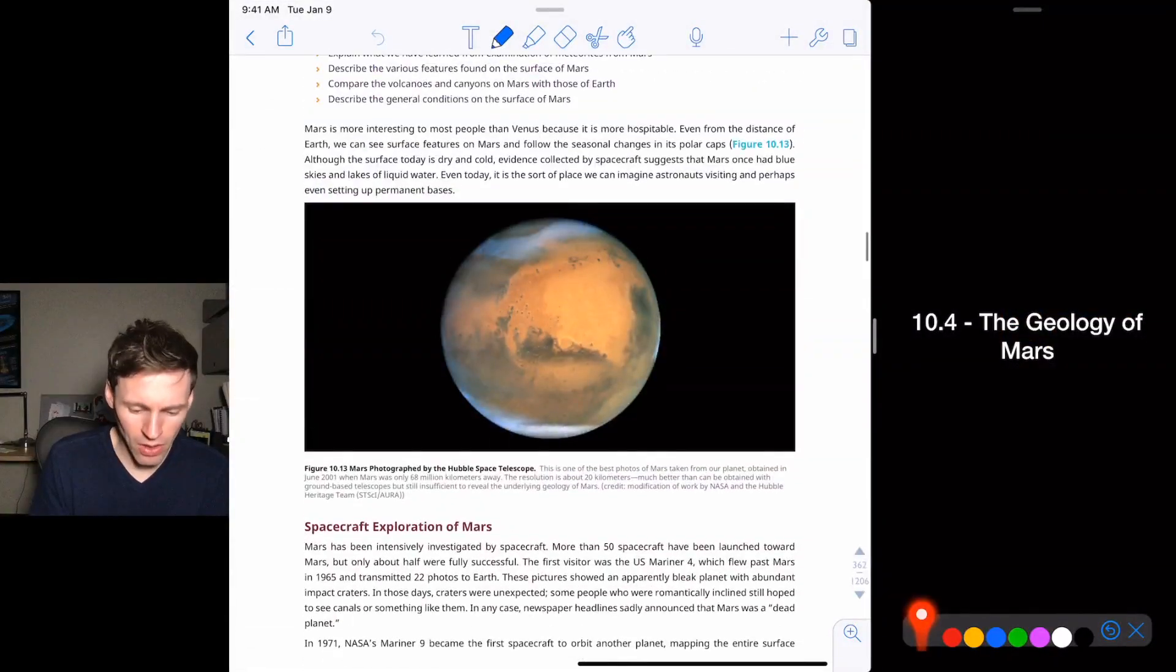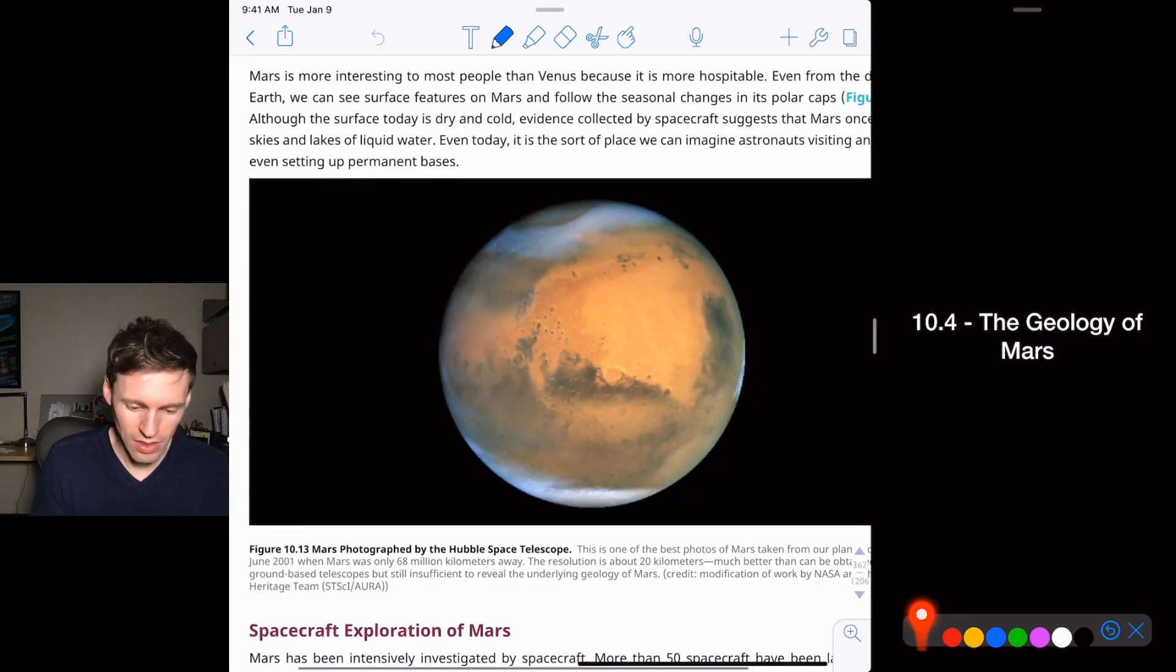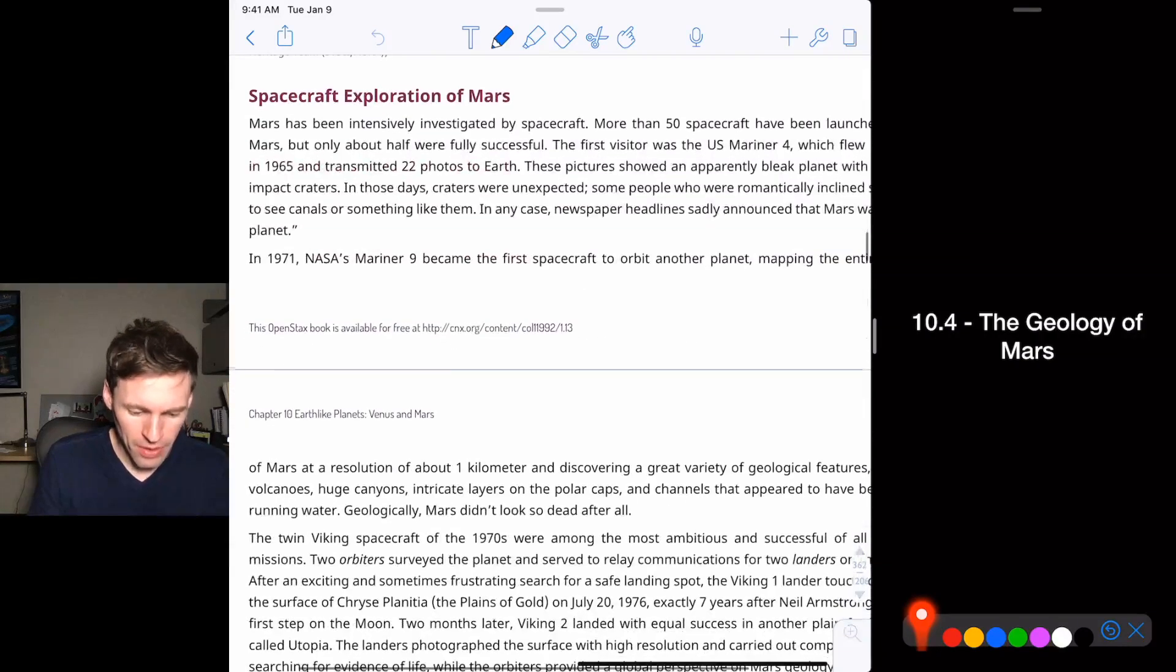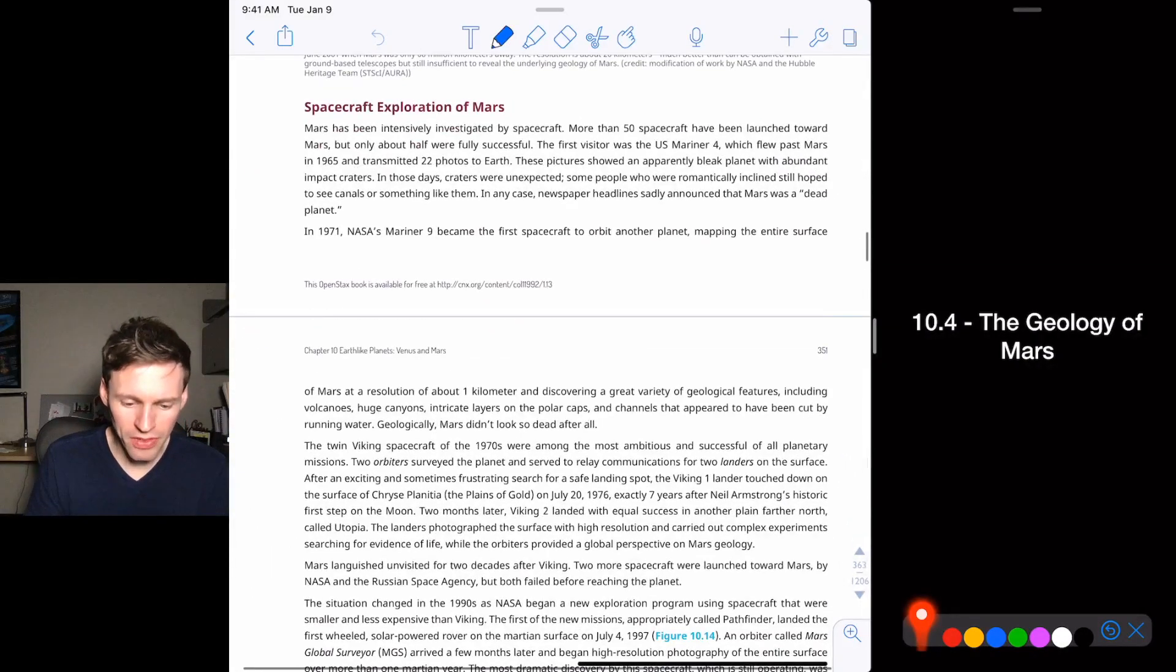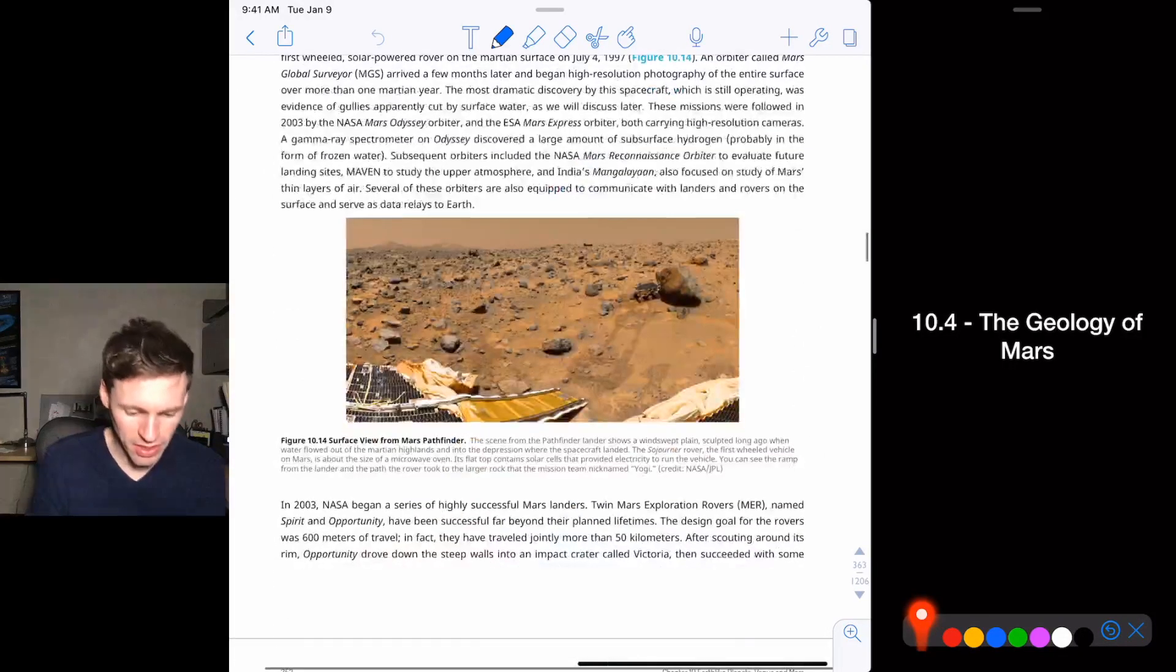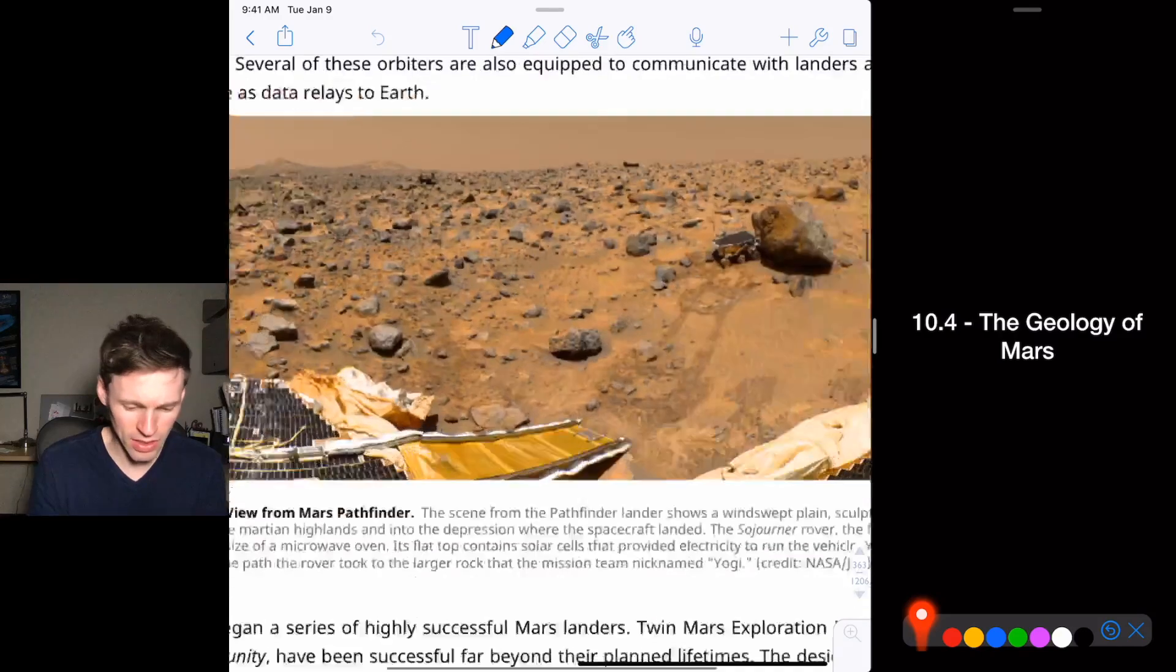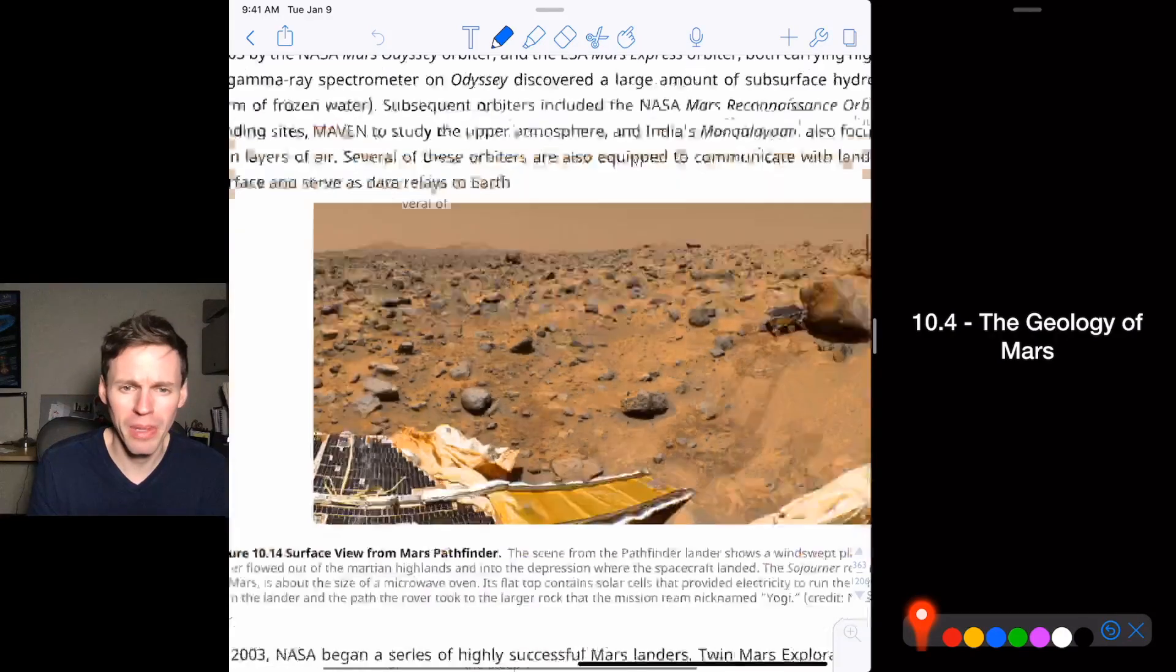This is Mars. This is a Hubble image of Mars. Pretty cool picture. The fact that you can take a picture like that with a telescope from earth to see its ice caps and everything. The spacecraft exploration, there's a bunch of information here. I'm not going to quiz you on any of that, but we've got the pathfinder took these pictures of Mars. How cool is that to be able to see the surface of another planet?